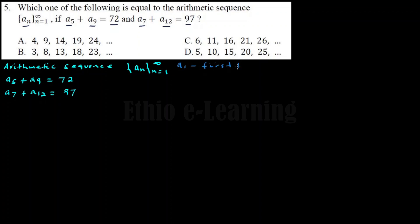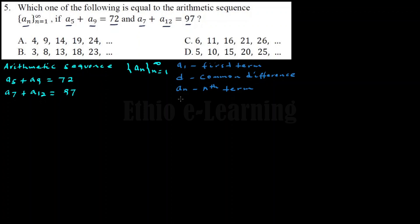So what steps do we have? For this arithmetic sequence, we need to find the common difference d. The common difference is what we need to determine. For an arithmetic sequence, the n-th term a_n is given by the first term plus n minus 1 times the common difference.